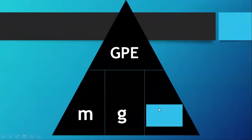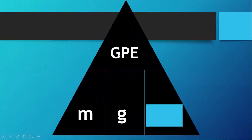If the height is missing from the word problem, first get the product of mass and gravity, then divide the value of the GPE in joules by that product of mass and gravity.